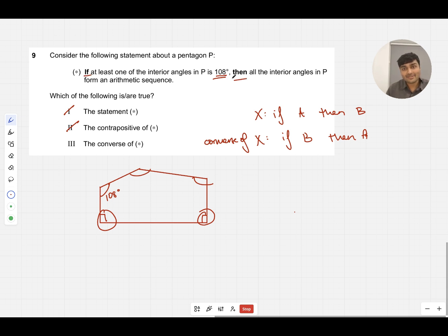Very kindly in this question, they've made it explicit what our if is and what our then is. What is the converse of our statement? It's saying if all the interior angles in P form an arithmetic sequence, then at least one of the interior angles in P is 108 degrees.